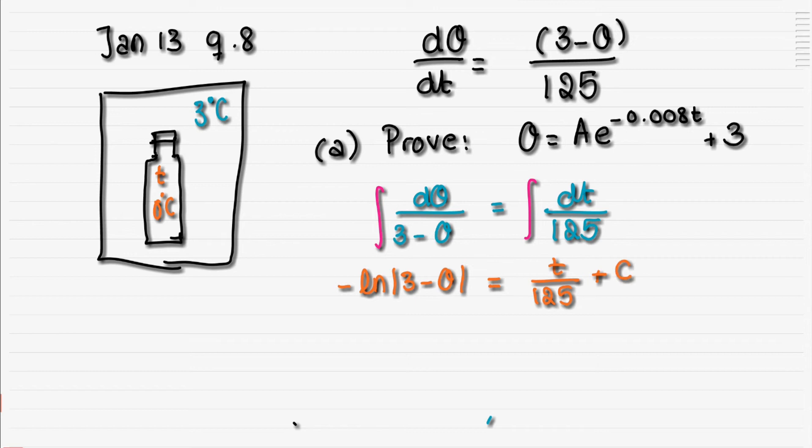Then the next step is we want θ to be the subject of the formula, so what we're going to do is we're going to first get rid of the ln by saying first that this is going to be ln(3-θ) equal to -t/125 minus c, which is also plus c. It doesn't matter, and the c is always a constant anyway. Then we're going to change this by putting e^[ln(3-θ)].